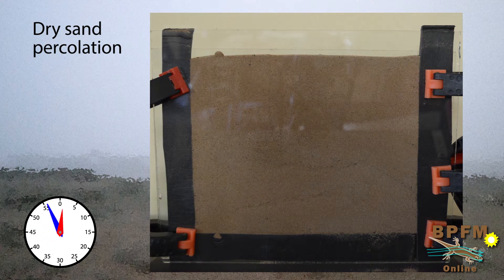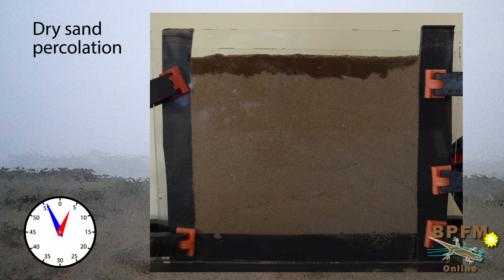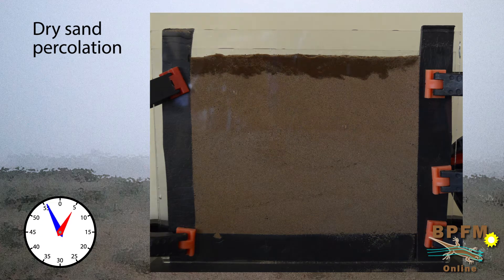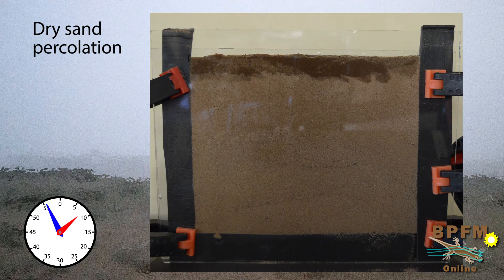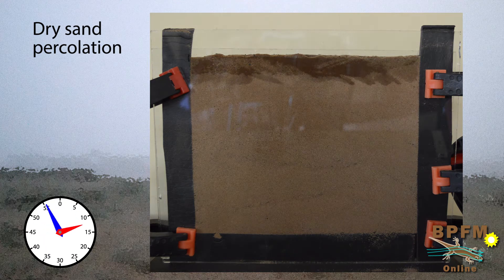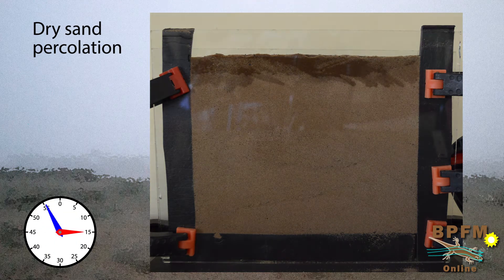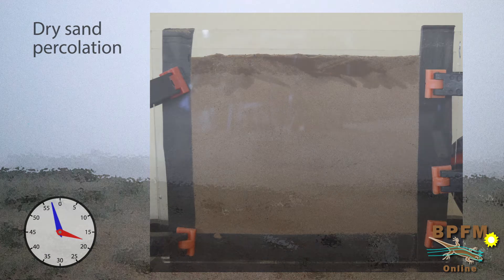Let's watch it again, and you can see that the water percolates downward slightly and stays there as if suspended. Over the longer term, the water continues to percolate down, but it seems to go in fits and starts. Here's a question: what do you think is going on here?